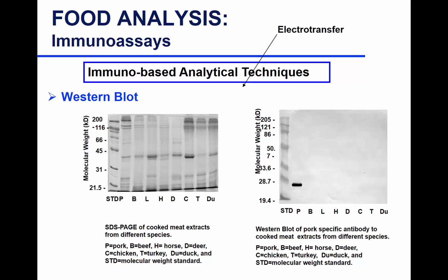What are some other ways to detect allergens? You have Western blots, ELISA, and you can also do HPLC and mass spectrometry. However, the chromatography and MS methods are not very user-friendly in terms of expense and amount of time needed to prepare your sample.